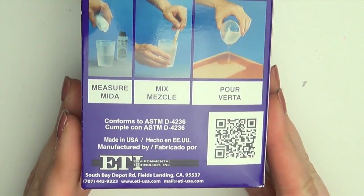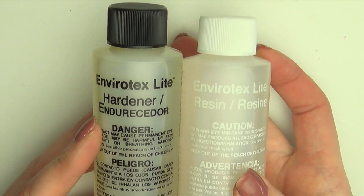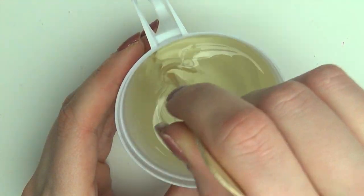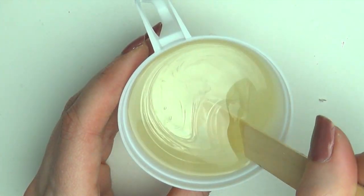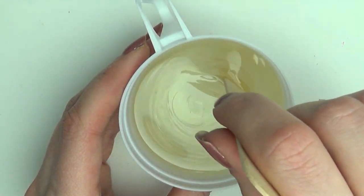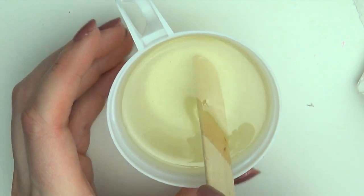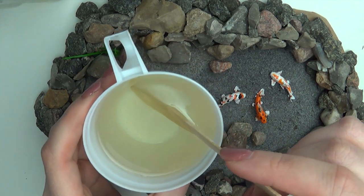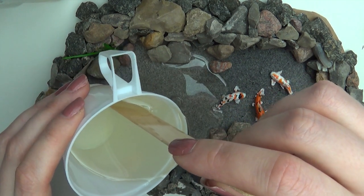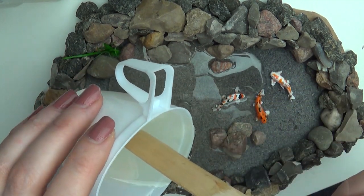Now get out your resin and mix the two components equally in a cup. Now slowly pour the resin in the pond. I didn't have quite enough resin in this batch, so I mixed another cup and poured it on top.